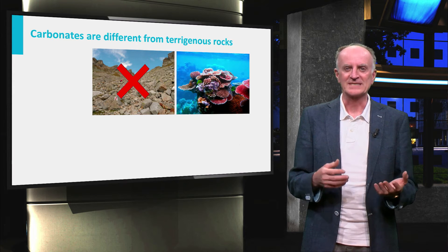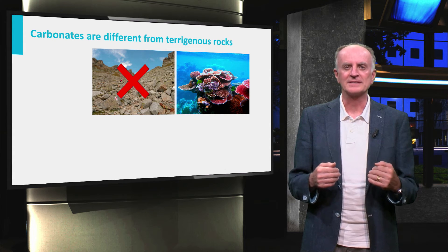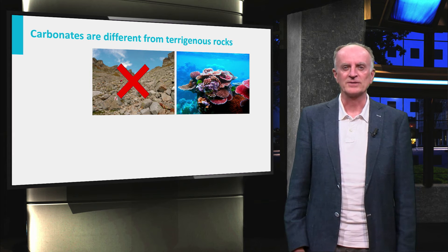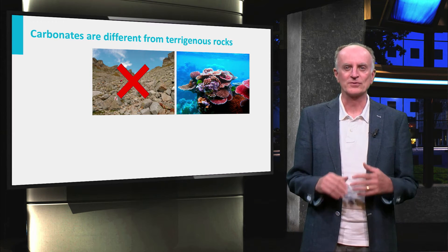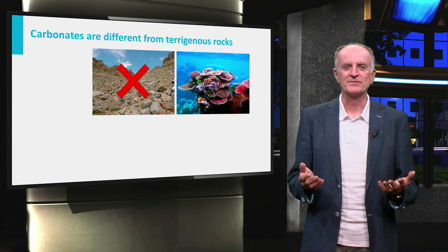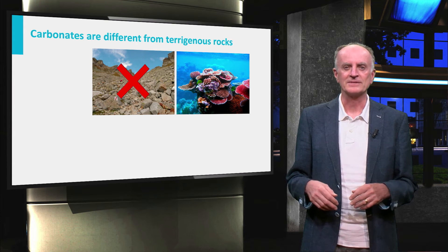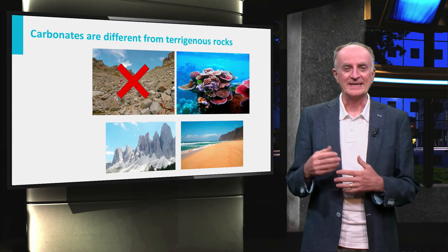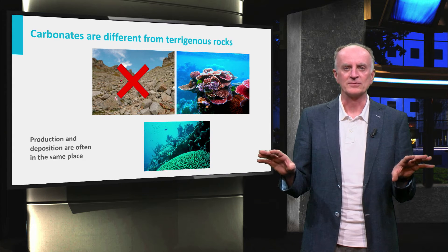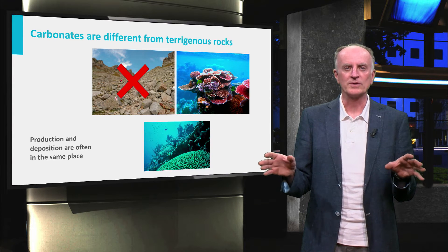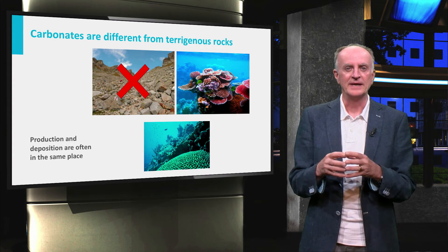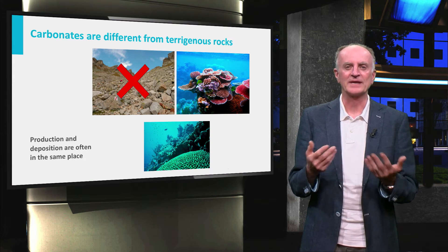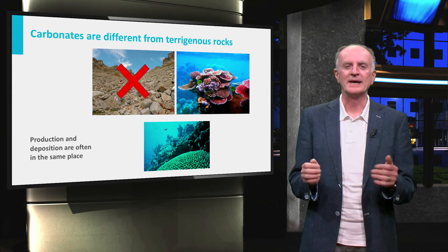Carbonates form by the extraction of calcium carbonate CaCO3 from seawater. Very often this extraction is controlled by organic activity — the beautiful corals you see in barrier reefs, for instance, are great factories of carbonate rocks. This means that production and deposition, which were fully separated for terrigenous rocks, occur now roughly in the same area and are subject to comparable local chemical, biological, and hydrodynamic conditions.